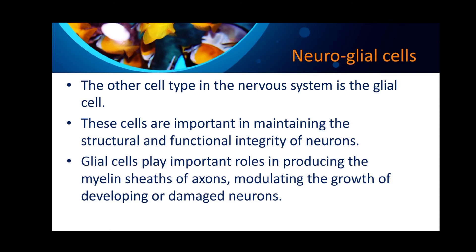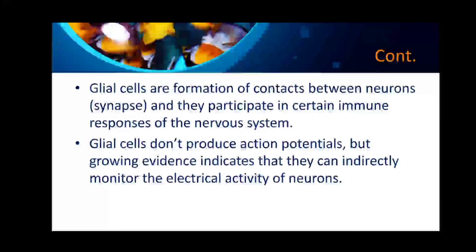Glial cells play important roles in producing the myelin sheaths of axons, modulating the growth of developing or damaged neurons. They are also involved in the formation of contacts between neurons and they participate in certain immune responses of the nervous system.